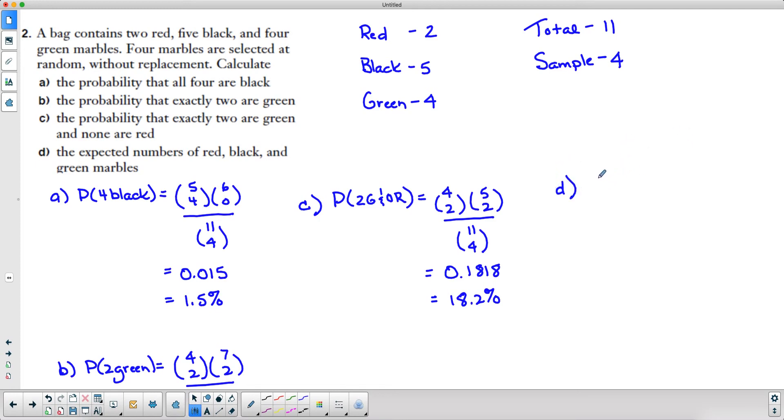We want the expected value of red. Remember that our expected value is n times a over a plus b. In this case, n is our sample size so it's going to be four. And a is our desired, the number of our desired items. In this case our desired items are the red marbles and there's two of those, so I'm going to put the two here. And then the bottom is the total population entirely, so our total population is 11. So this is 8 over 11, which is 0.73.